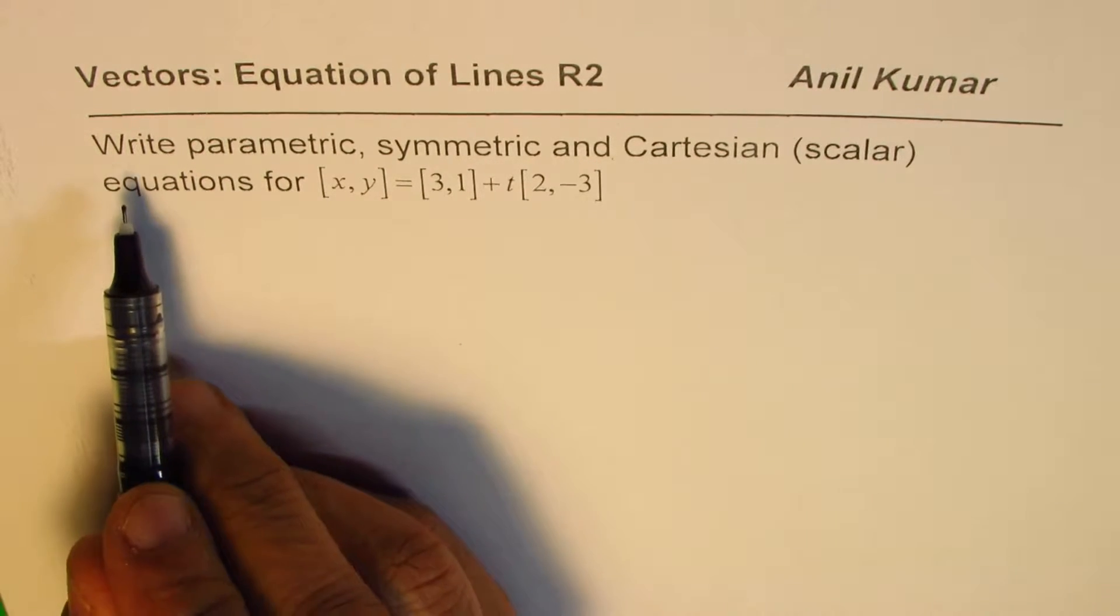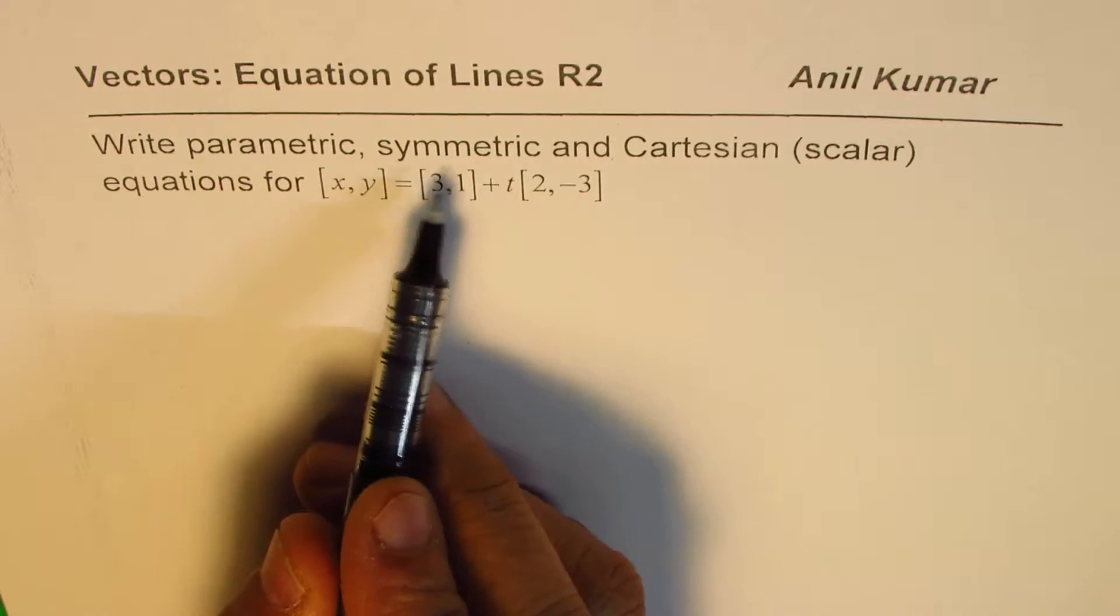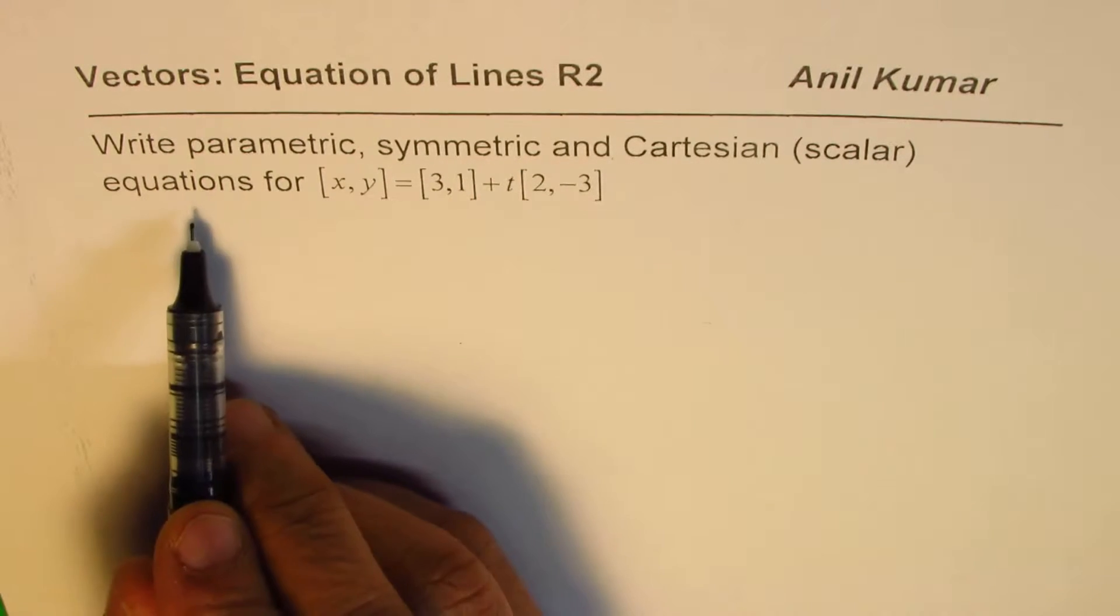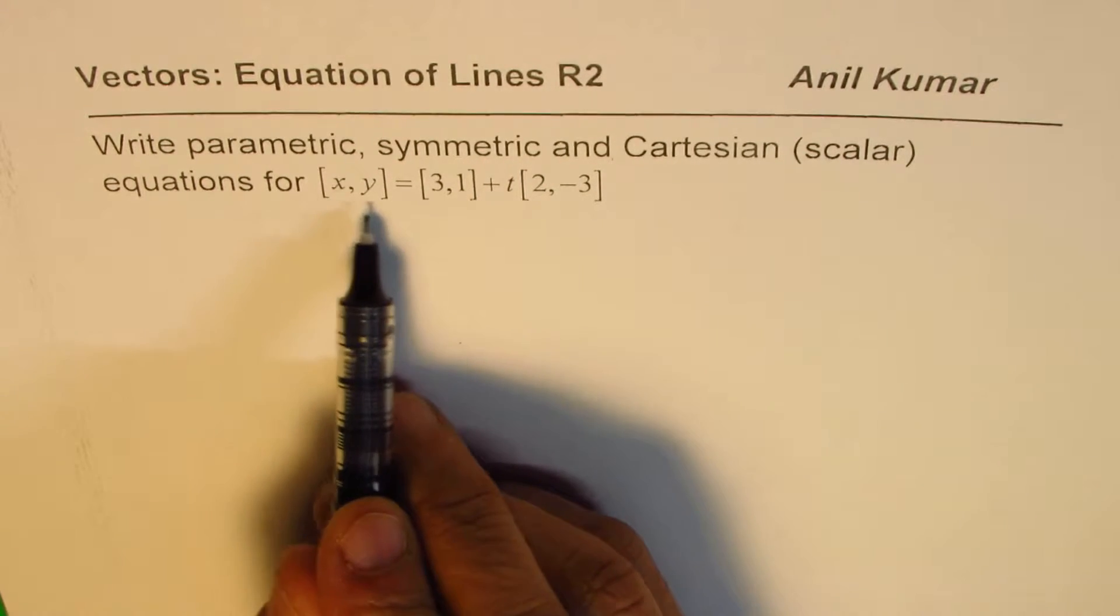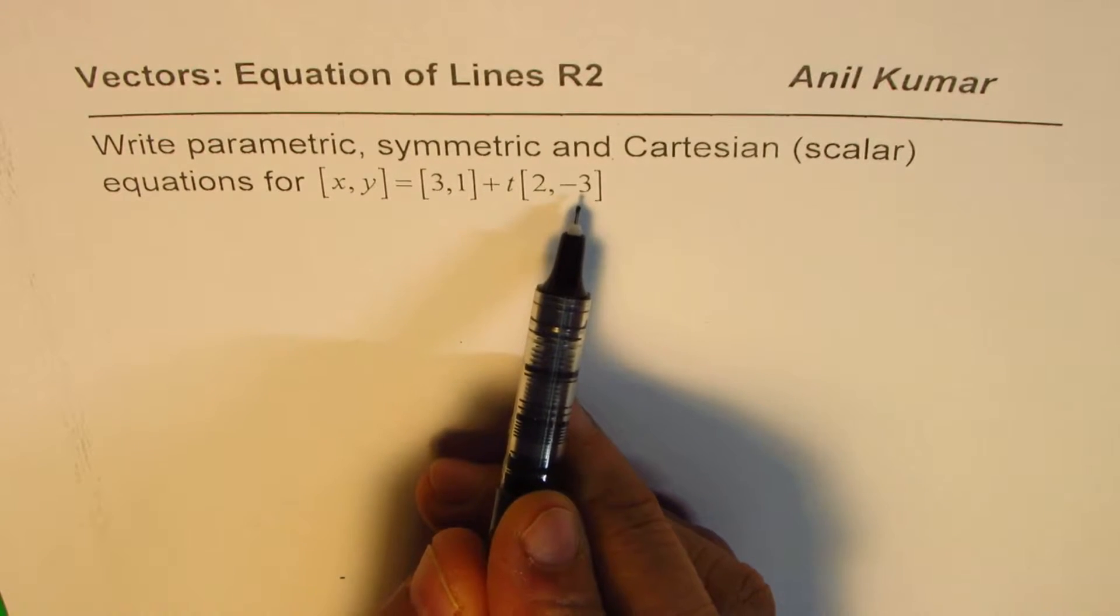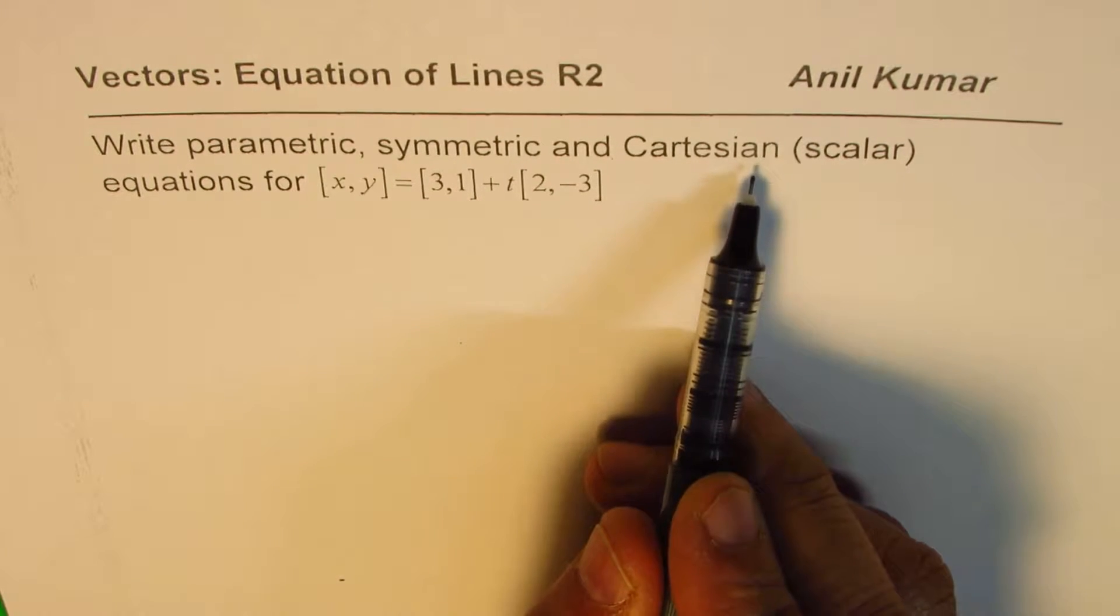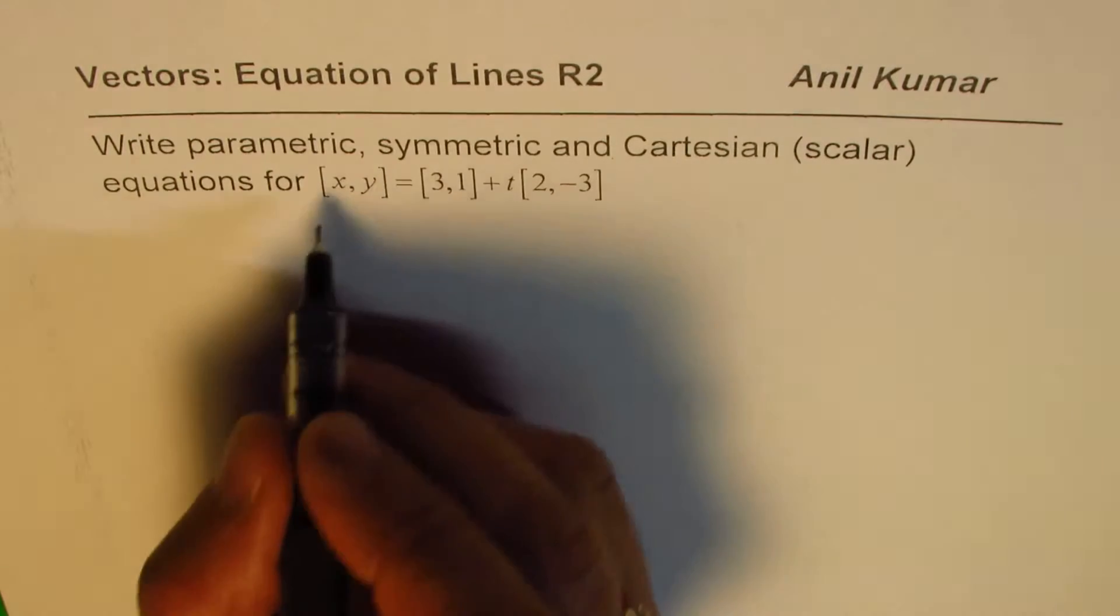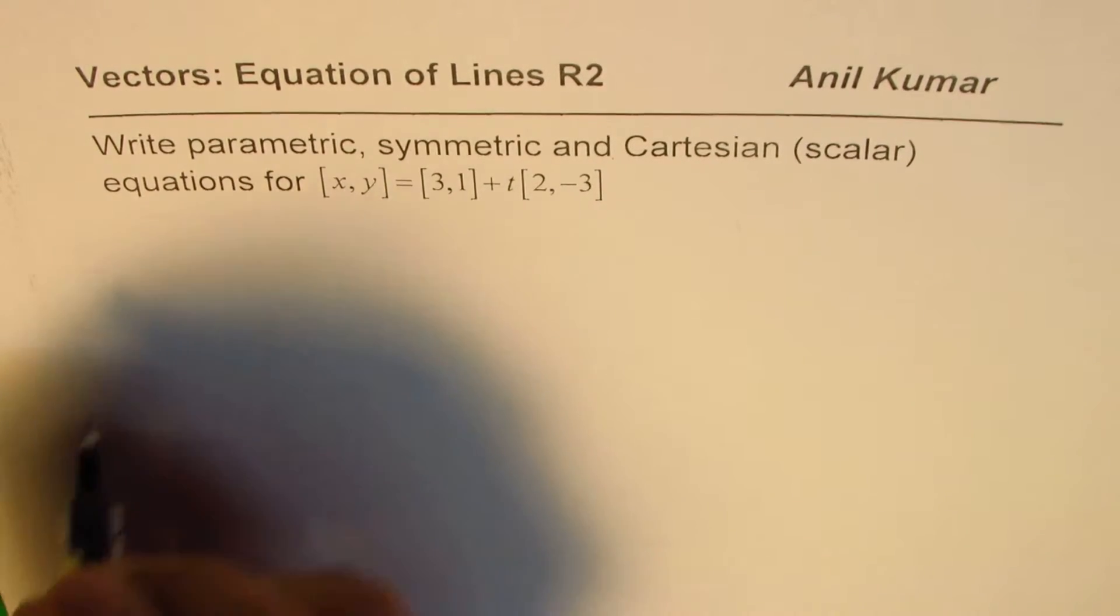The equation here is: write parametric, symmetric and Cartesian equation for x, y equals to [3, 1] plus t[2, -3]. Now Cartesian equation is also called scalar equation. So let's see how to write all these equations.